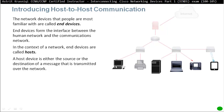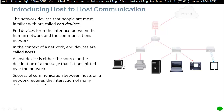For example, the PC here wants to communicate with the server. The end device is the source — that's the PC — and the server is the destination. The message is going to go through intermediary devices to get to the destination. The destination could sometimes be an intermediary device, but that's not frequent.